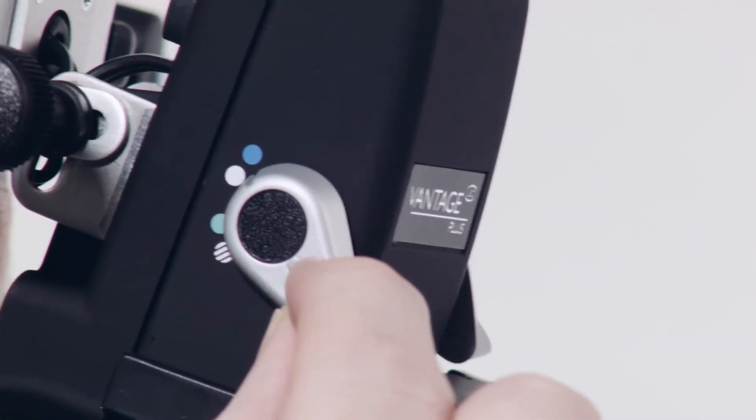There are four different light filters to cover all exam requirements. Cobalt blue is for fluorescein angioscopy and is unique to the Vantage Plus.